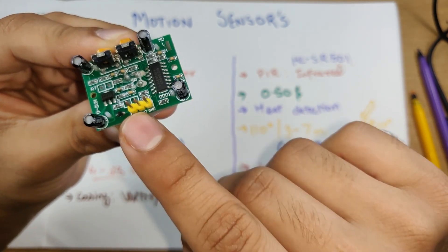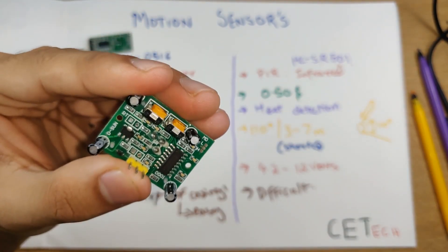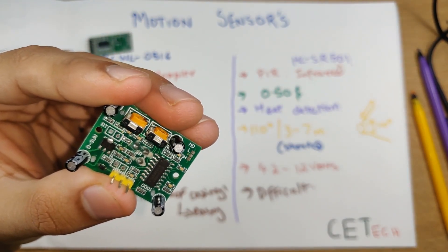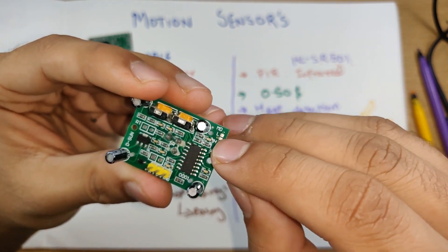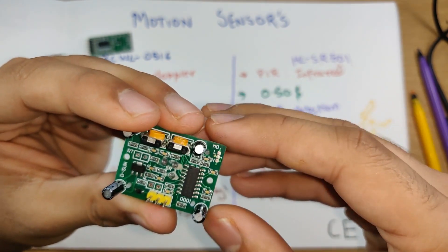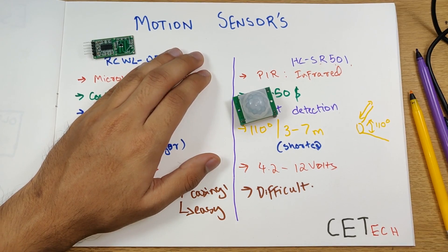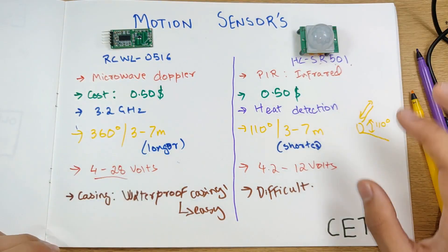We also have three pads over here which are jumpers for selecting trigger type wherein you can select for H it's repeat trigger and L it's can't repeat trigger. I'll mention all the relevant links for these sensors so you can read about it in detail. That's it about the theoretical part of all the sensor stuff.